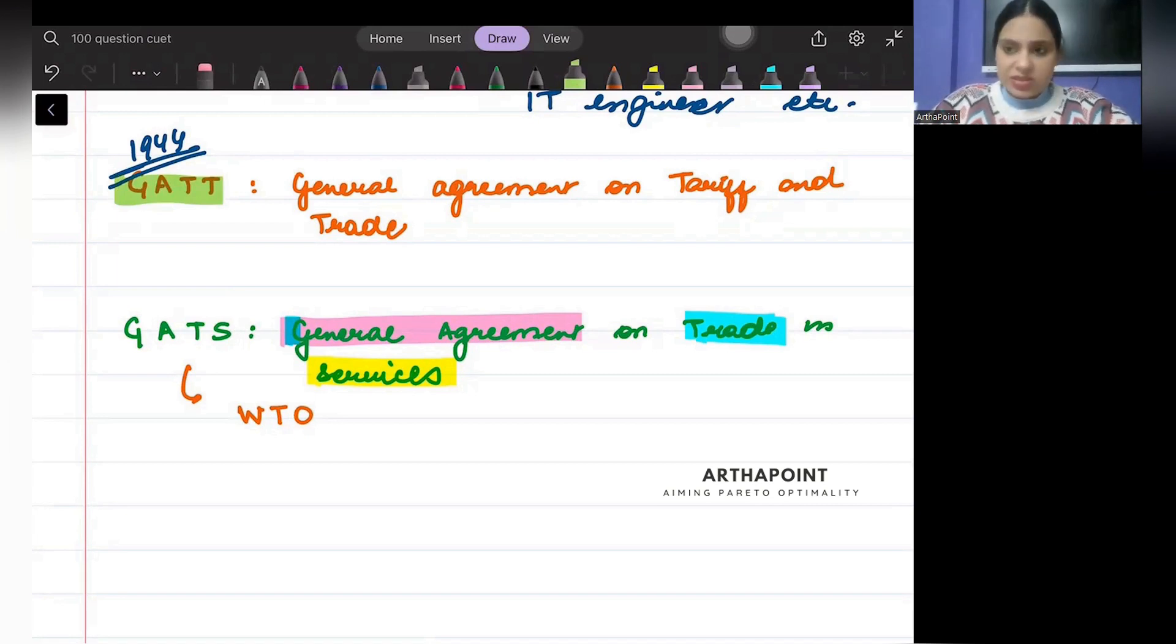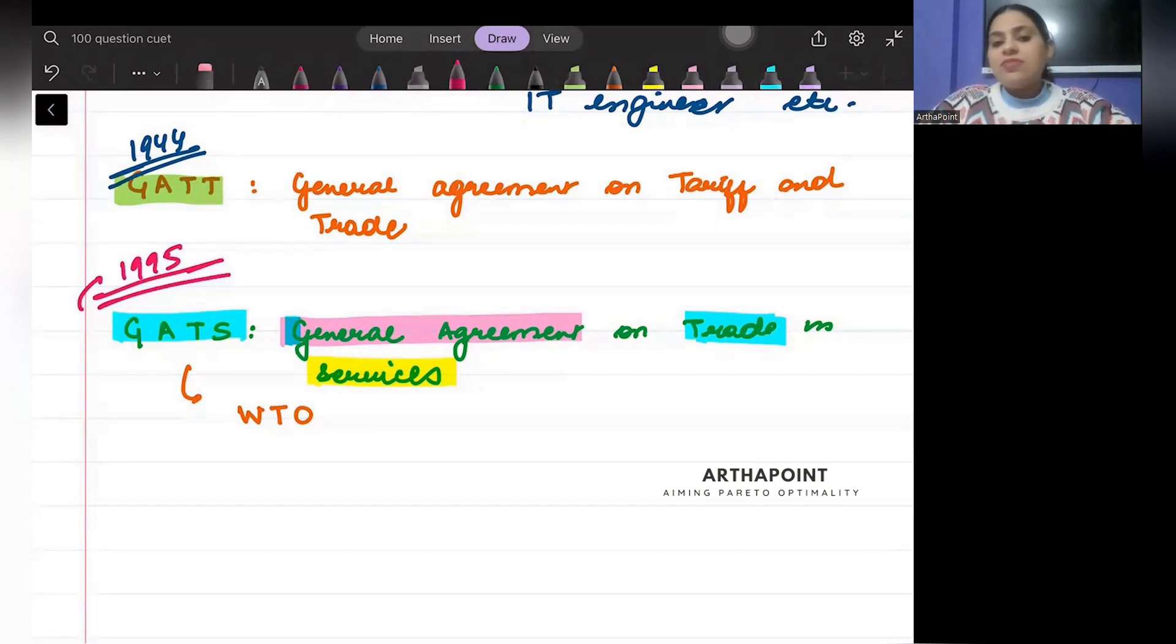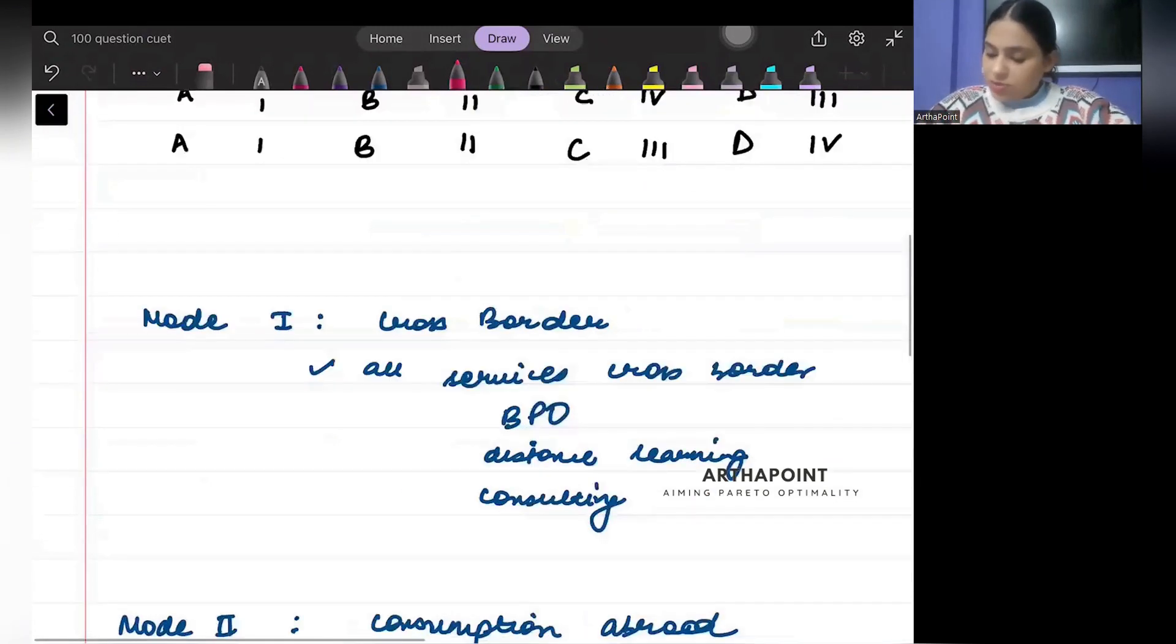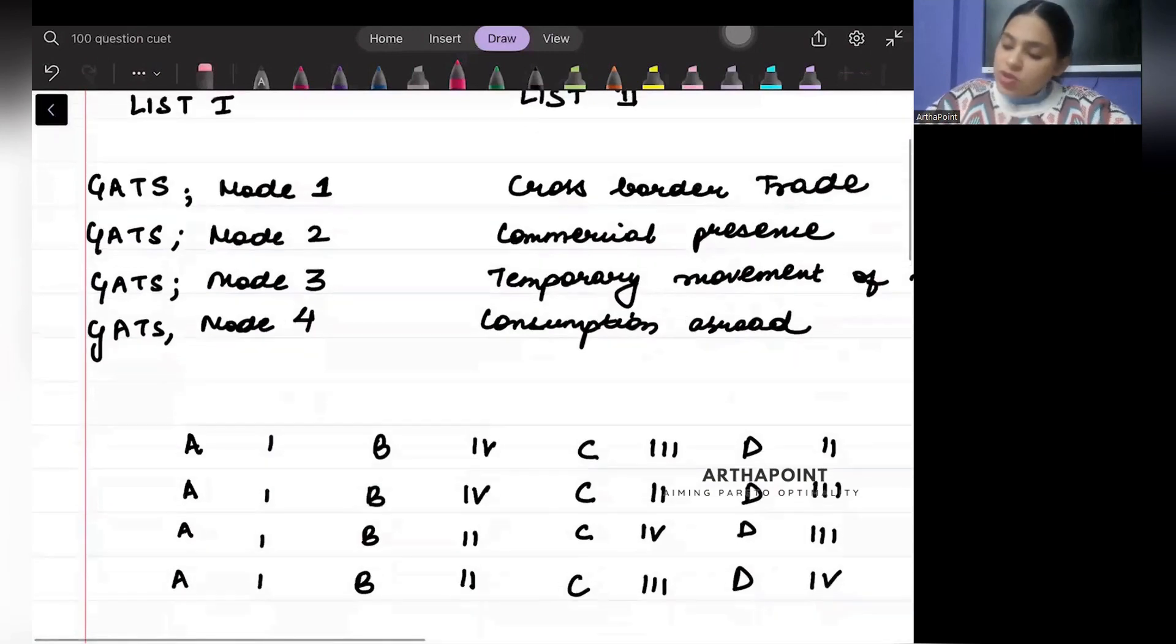That is what GATS is about, and this GATS came into force in 1995. Now they have to apply some fundamental principles. Now, let me go back to the question. There are four modes given here: mode 1, mode 2, mode 3, and mode 4.